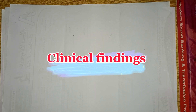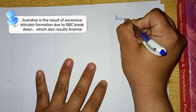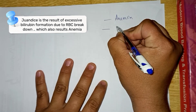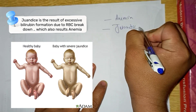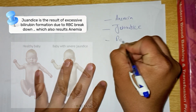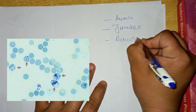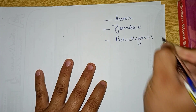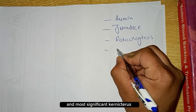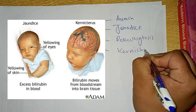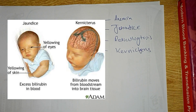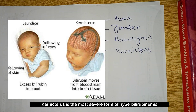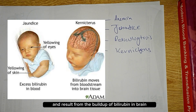The common clinical findings of HDN include anemia, jaundice, reticulocytosis, and most significantly kernicterus. Kernicterus is the most severe form of hyperbilirubinemia and results from the buildup of bilirubin in the brain, which can cause seizures, brain damage, deafness, and even death.